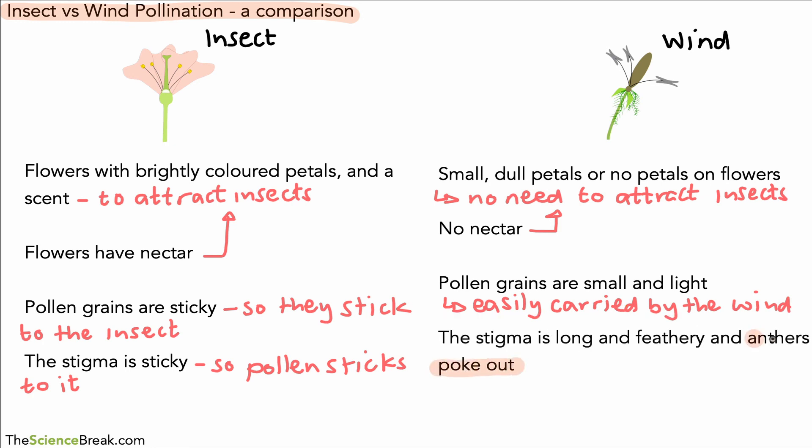And then we have the stigma that is structured slightly differently, and the anthers poke out and produce lots of pollen. The anthers poke out so that they can catch the wind, and the stigma is long and feathery, very important, again to catch any pollen grains that are passing by on the wind.